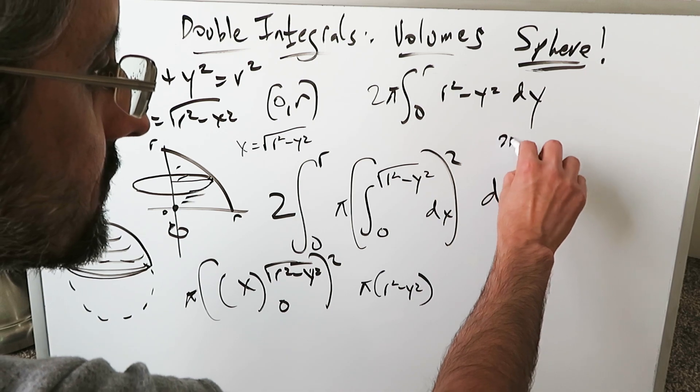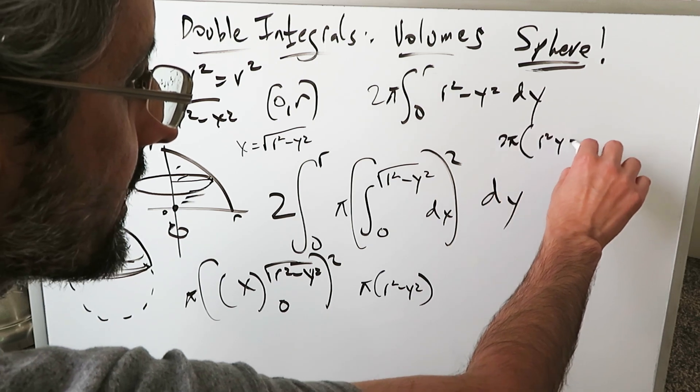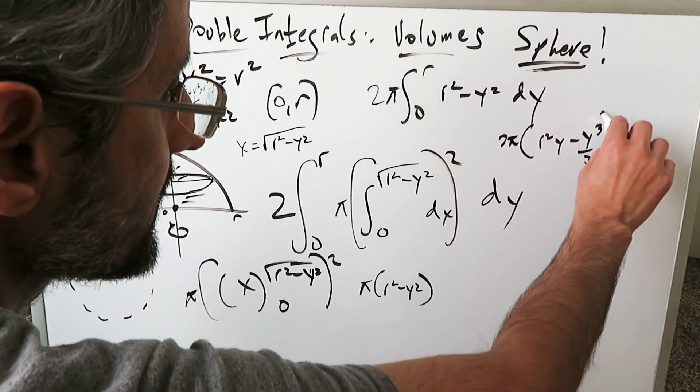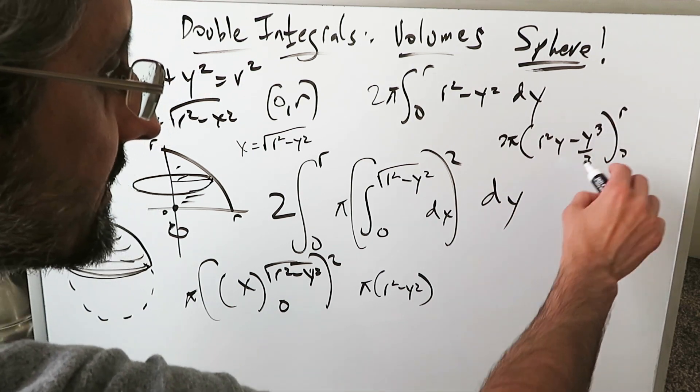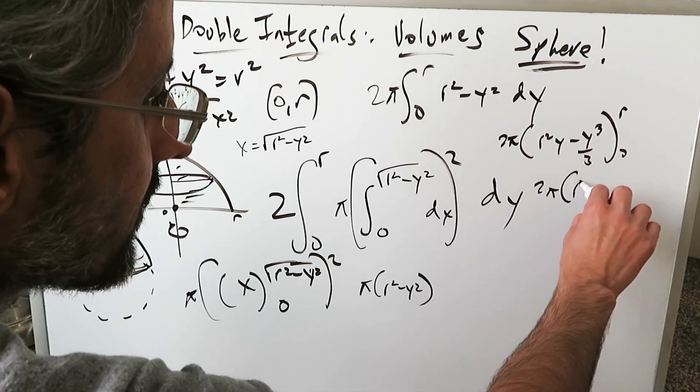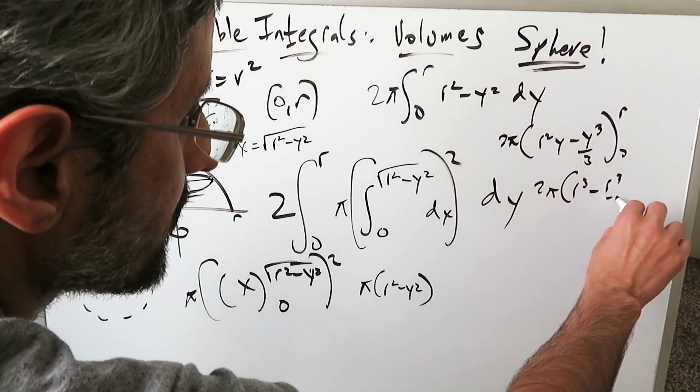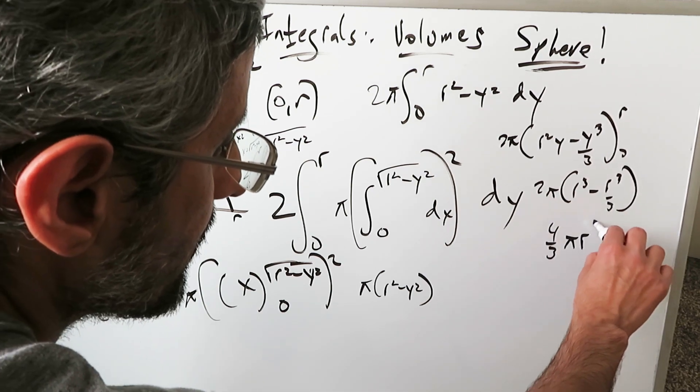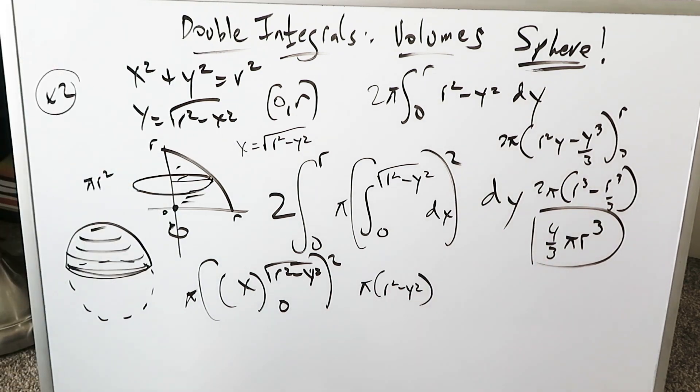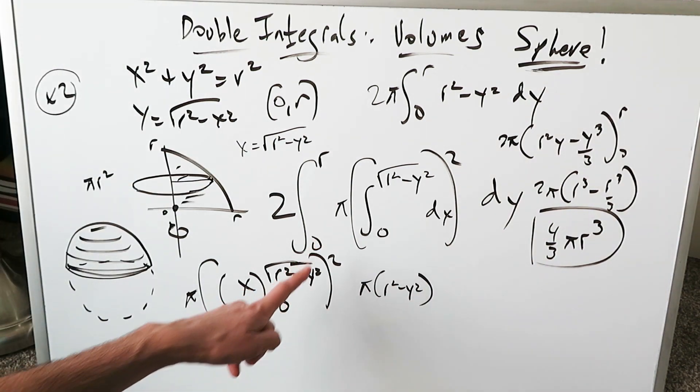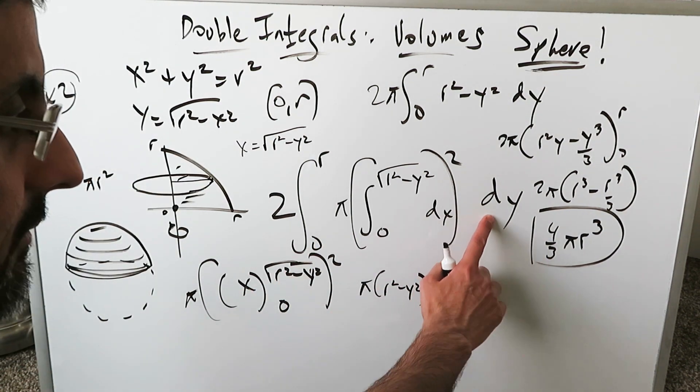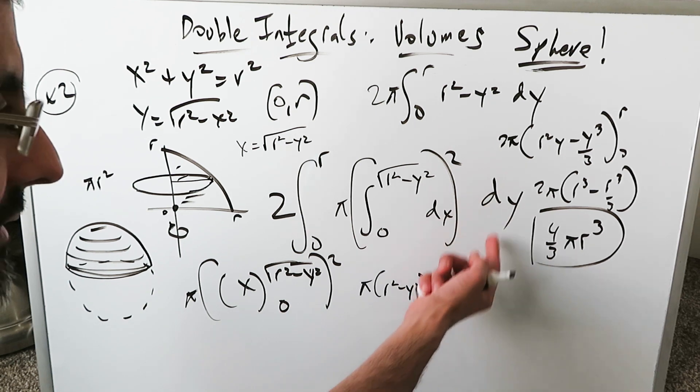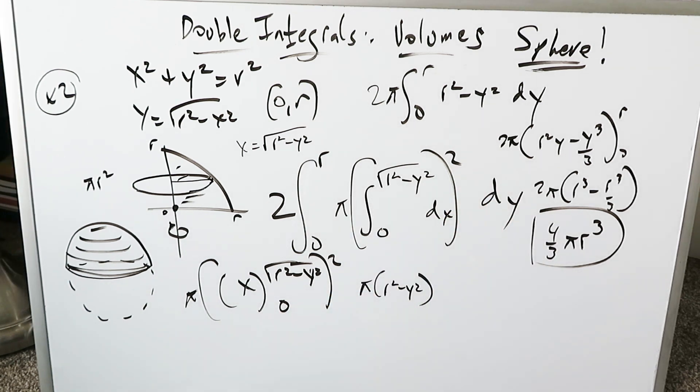You know you can easily integrate this. It's 2 pi. You have r square y minus y cube over 3 from an r and a 0. You put these in, you'll have a 2 pi r cube minus r cube over 3. Complete all of this, you'll have 4 over 3 pi r cube, and that's a volume of a sphere using this double integral procedure with eventual respect to dy. Because we eventually did everything with respect to dy.